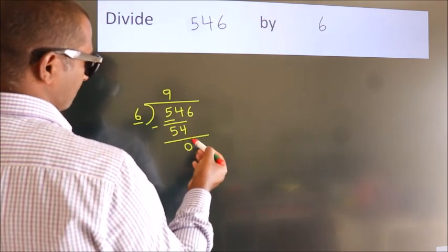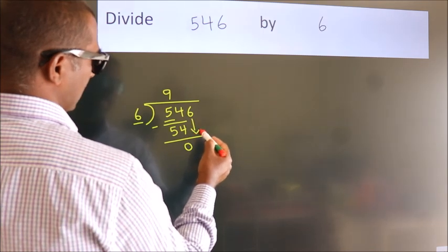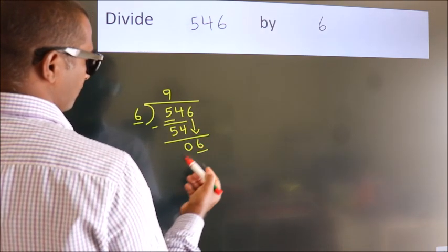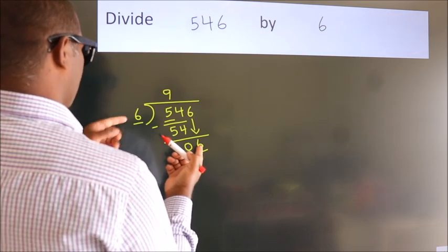After this, bring down the beside number. So bring down 6. When do we get 6 in the 6 table?